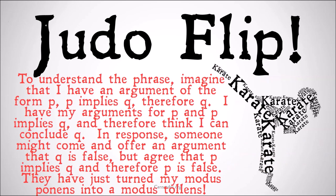To understand the phrase, imagine that I have an argument of the form: P, P implies Q, therefore Q — good classic modus ponens. I have my arguments for P, and P implies Q, and therefore I think I can conclude Q. I think I'm justified in holding P, and P implies Q, and so I can conclude Q.